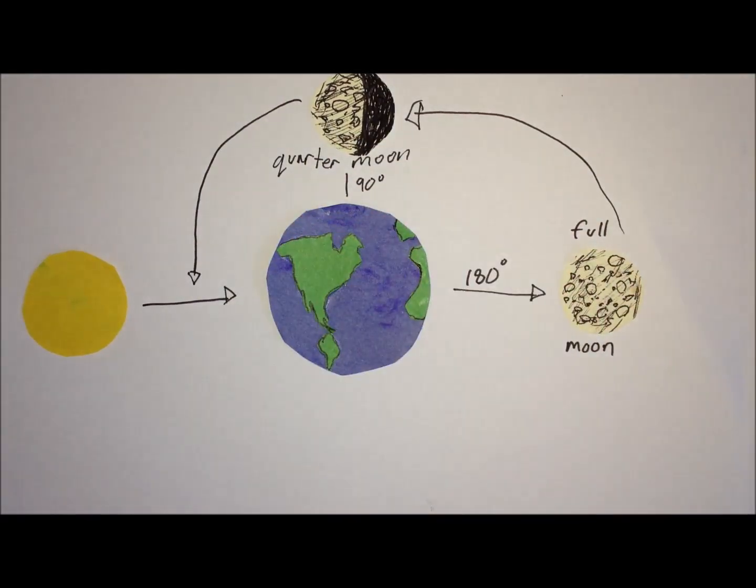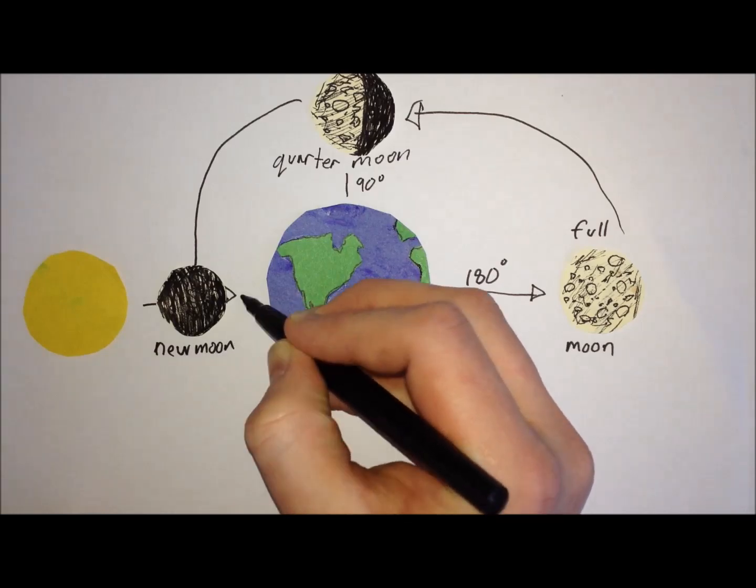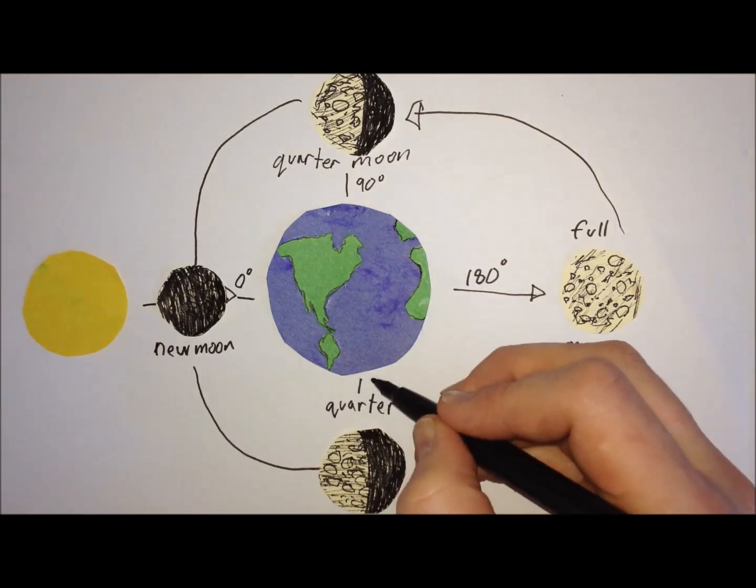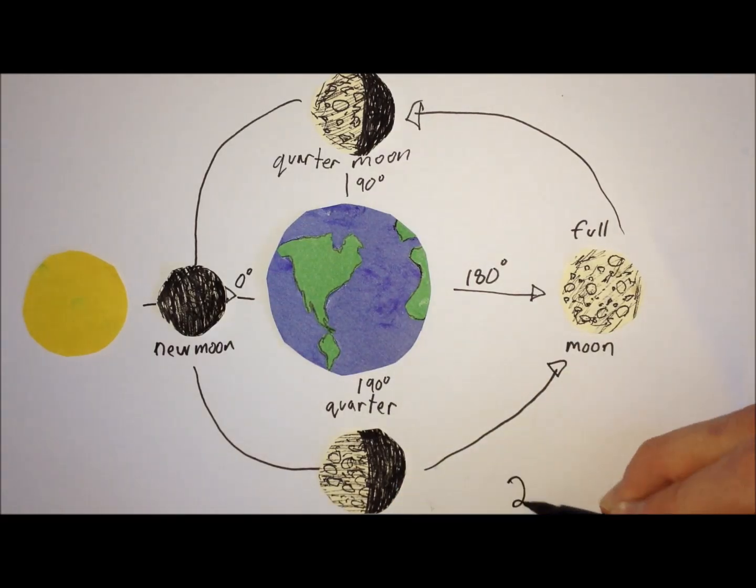When the moon passes between the sun and the Earth, you get a new moon. This is also when solar eclipses can occur. When the moon is another 90 degrees away, you have your third quarter moon. Then finally, it goes back to a full moon and completes the cycle after 29.53 days.